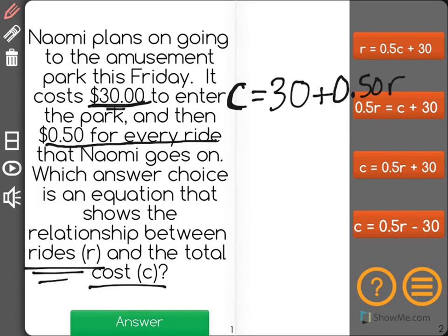So what we have here is our total cost is equal to, we could get rid of the zero in the hundredths place, 0.5R plus the $30 entry.